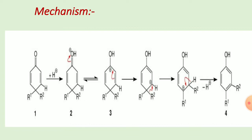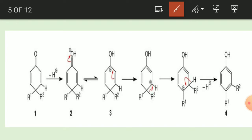In the next step, bond shifting takes place to stabilize the carbocation. The R group migrates to the carbocation carbon. A third carbocation forms; because tertiary carbocation is more stable than secondary, which is more stable than primary, the tertiary carbocation is preferentially formed.